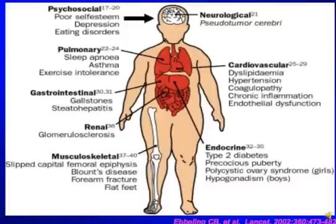This of course leads to a whole host of biological, psychological, and sociological problems, including neurological, cardiovascular, endocrine, musculoskeletal, renal, gastrointestinal, pulmonary, and psychosocial issues. We don't have time to get into all of these here, but the negative consequences associated with this explosion in childhood obesity are beyond debate.